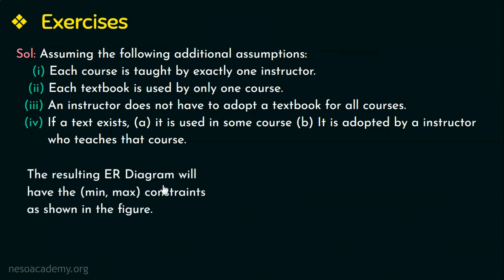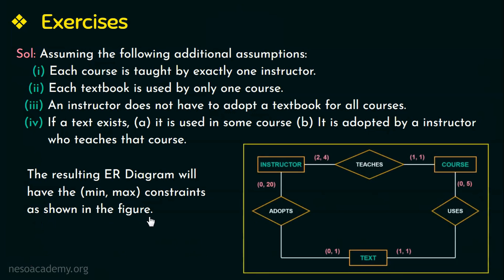The resulting ER diagram will have the min-max constraints as shown in the figure. As given in the question, an instructor teaches a minimum of two courses and a maximum of four courses. Therefore the min-max constraint of the instructor entity type in the relationship teaches is (2, 4). As we have assumed each course is taught by exactly one instructor, all courses have total participation, and each course can be taught by only one instructor — therefore (1, 1).